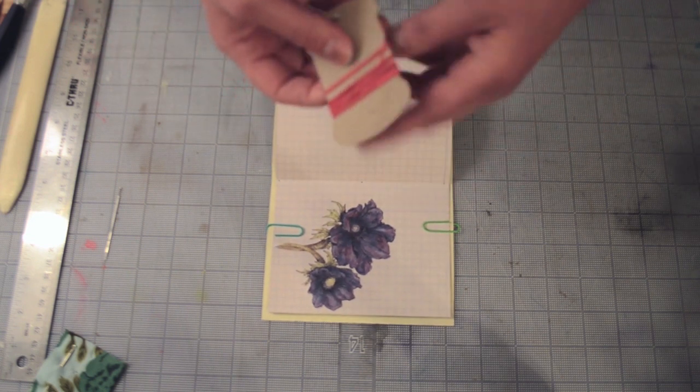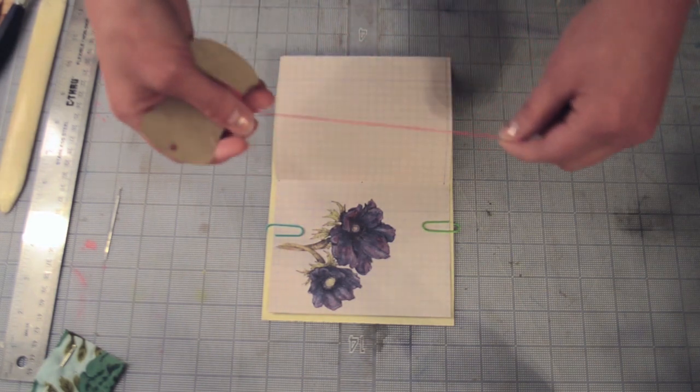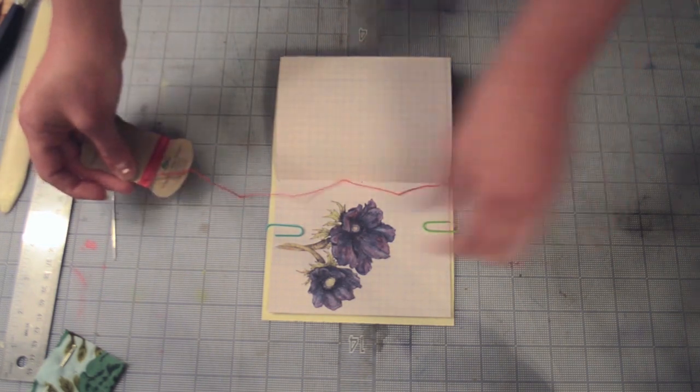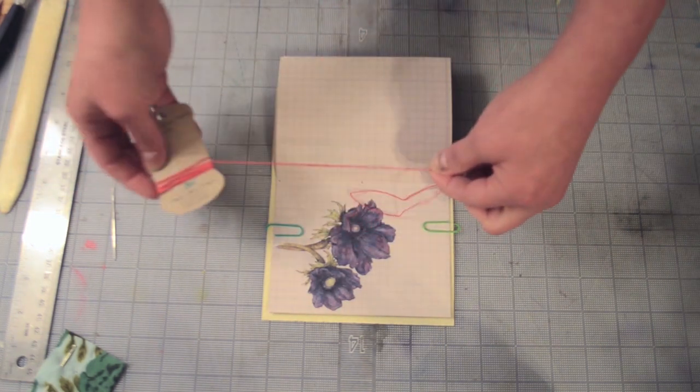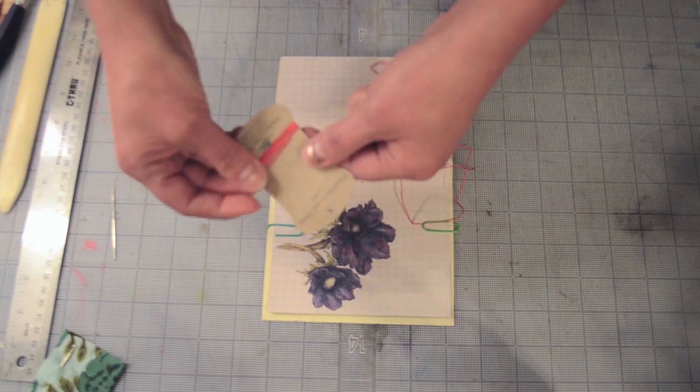So once you have your holes punched, we need to get the thread ready. So for thread, we don't need that much. You just need to measure about maybe a little more than two lengths of your book.